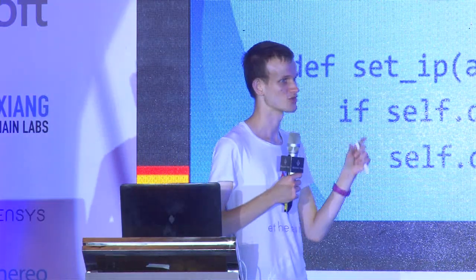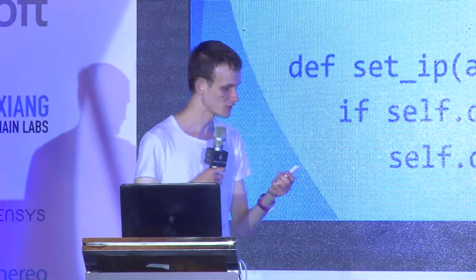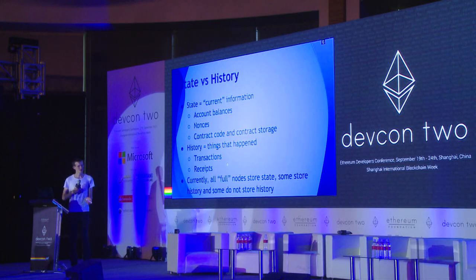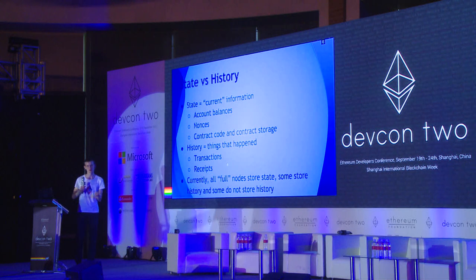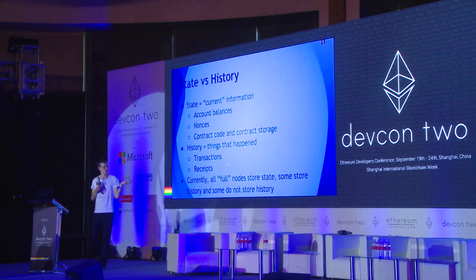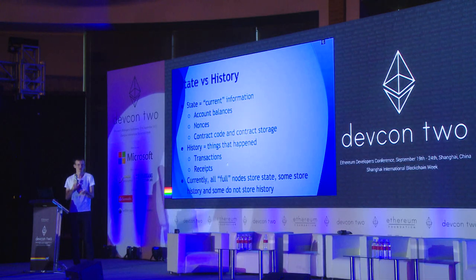At the top of the contract, there's a data mapping going from a domain to the owner and IP address of each domain. The code and the storage are both part of what we call the Ethereum state. The state means current information associated with the Ethereum protocol — stuff you have to care about right now. This includes account balances, how much ether you have, nonces, contract code, and contract storage.